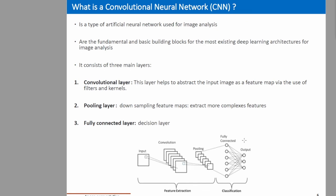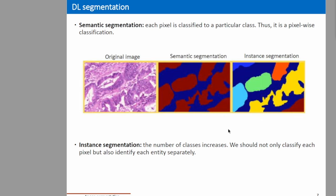The CNN is the most used architecture in all deep learning applications. Now we focus on segmentation. For segmentation, we have different types. First, we have semantic segmentation, where we assign one class to each pixel of the original image. Here we will have a binary classification — each pixel is classified as either the background or the object inside the image.